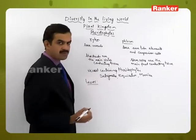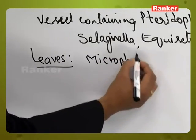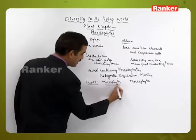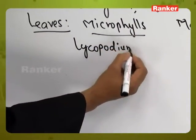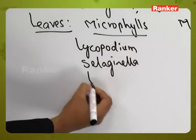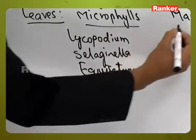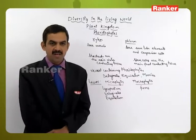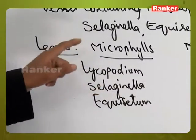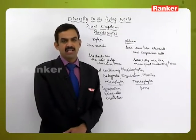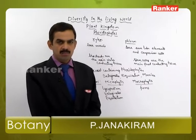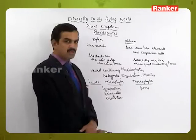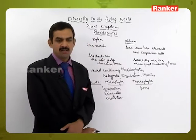In pteridophyta plants, two types of leaves are there: microphylls and macrophylls. Microphyll condition is present in Lycopodium, Selaginella, and Equisetum, whereas macrophylls are present in ferns. Leaf gaps are not disturbing the vascular tissues in the stem of plants with microphylls, whereas in plants with macrophylls, the vascular tissue in the stem is disturbed because of the formation of leaf gaps.